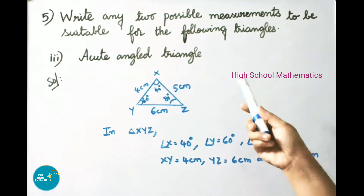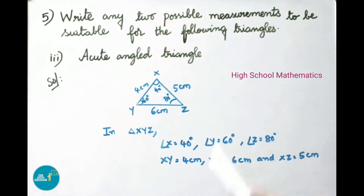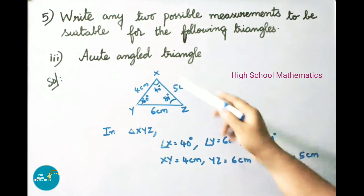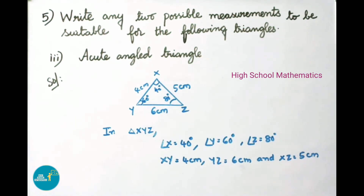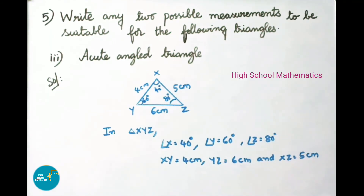Fifth question, third part: acute angle triangle. We have drawn triangle XYZ. In triangle XYZ, angle X equals 40 degrees, angle Y equals 60 degrees, and angle Z equals 80 degrees. Other possible measurements: side XY equals 4 cm, side YZ equals 6 cm, and XZ equals 5 cm.